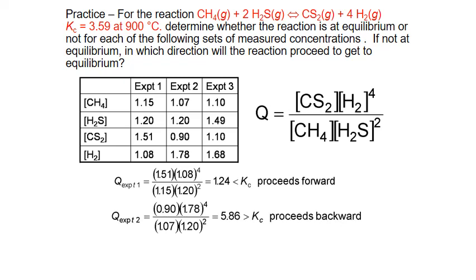For experiment two, our concentrations give us a Q_C value of 5.86, which is greater than our K_C value of 3.59. This means the reaction will shift in the opposite direction: the reverse reaction will go more quickly, decreasing the amount of products and increasing the amount of reactants until we reach equilibrium.